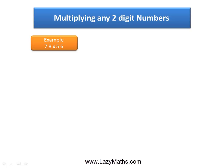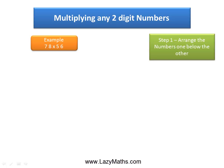Here's an example of multiplying any two-digit number: 78 times 56. The first step is to arrange the numbers one below the other, so we write 78 and below 78 we write 56.